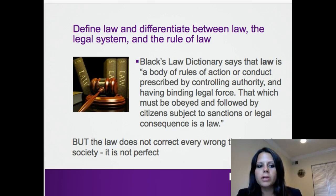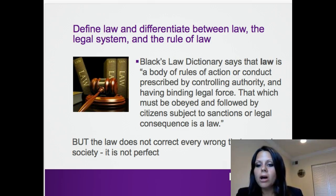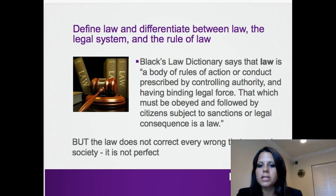While it does allow for some predictability, sometimes people go unpunished for doing the wrong thing, and other times people get punished when they did what was right. A person is innocent — we call it the cloak of innocence. They're innocent until proven guilty beyond a reasonable doubt in a criminal case, or by preponderance of the evidence — more likely than not — in a civil case. That's just hard to prove sometimes, and sometimes you don't have the evidence, so someone can go free who was in the wrong.